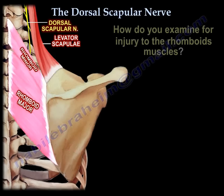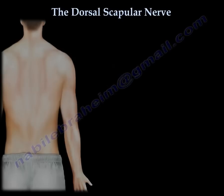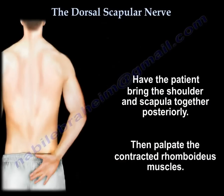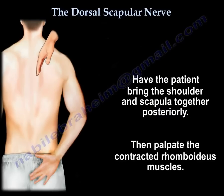To examine the rhomboids, have the patient bring the shoulders and the scapulae together posteriorly, then palpate the contracted rhomboids between the medial aspect of the scapulae.